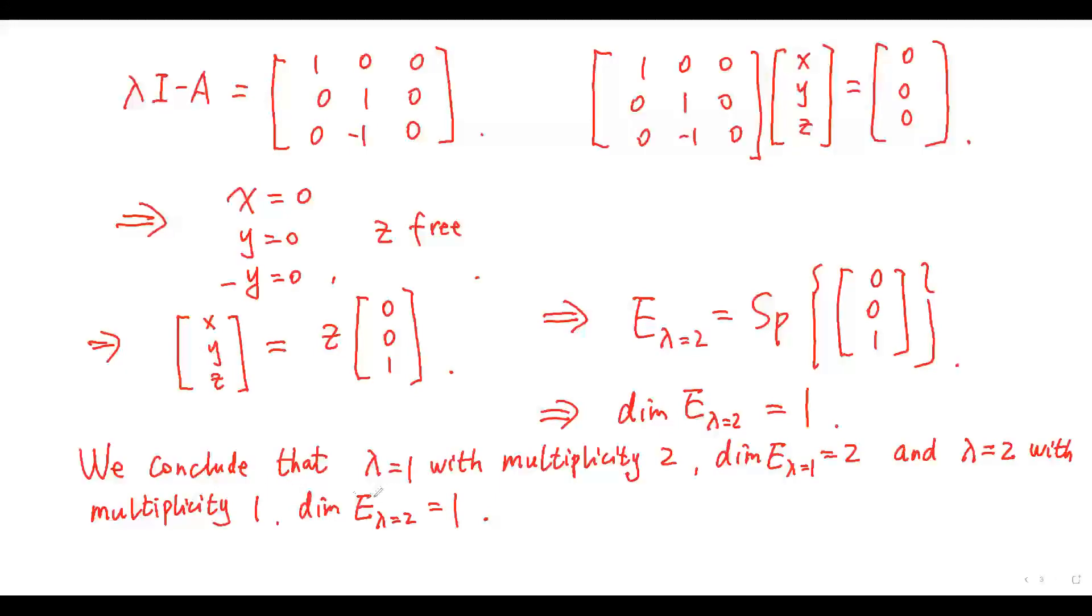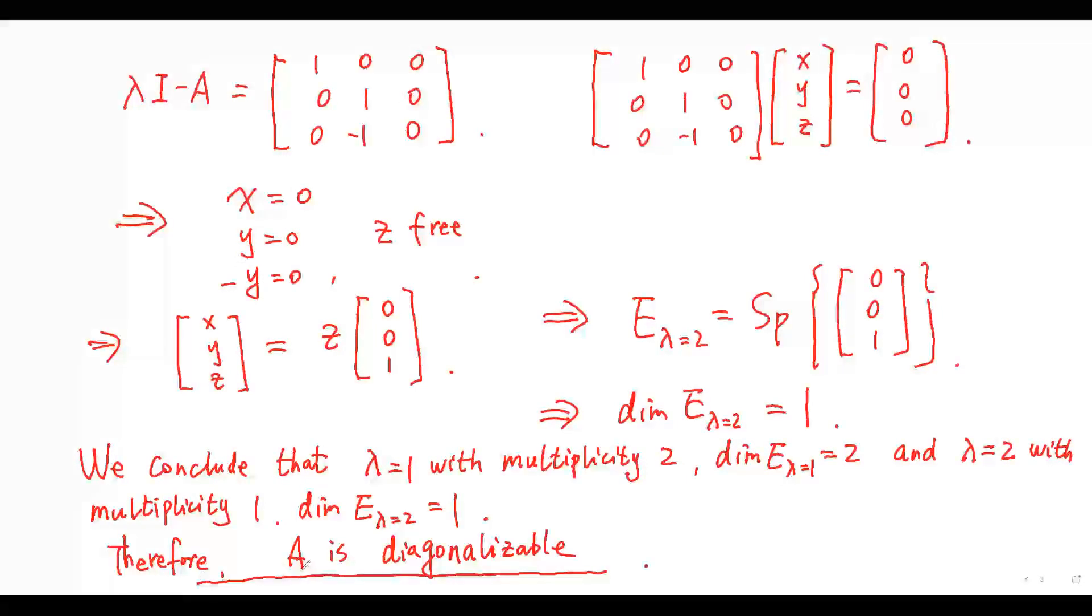We conclude that the eigenvalue equals 1 with multiplicity 2 has the dimension of corresponding eigenspace equals 2. And the eigenvalue equals 2 with multiplicity 1 has the dimension of the corresponding eigenspace equals 1. This implies A is diagonalizable.